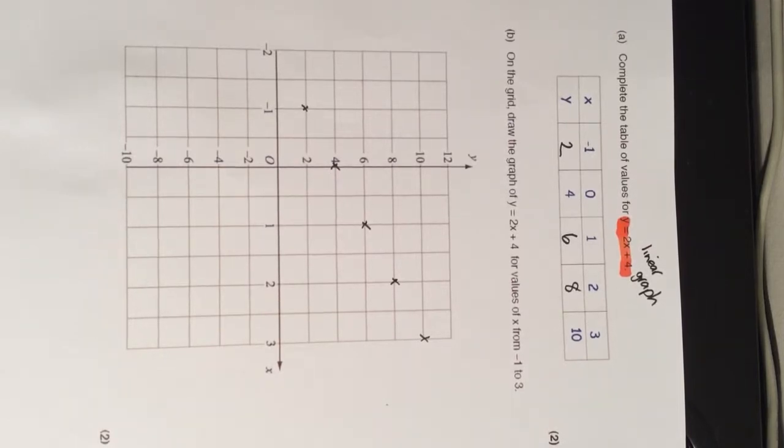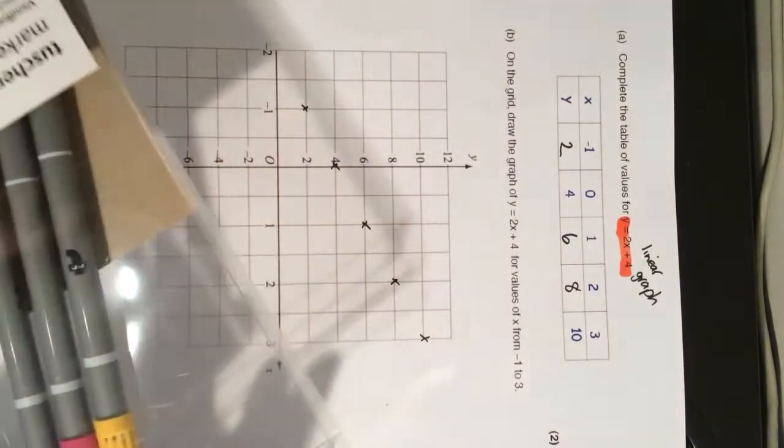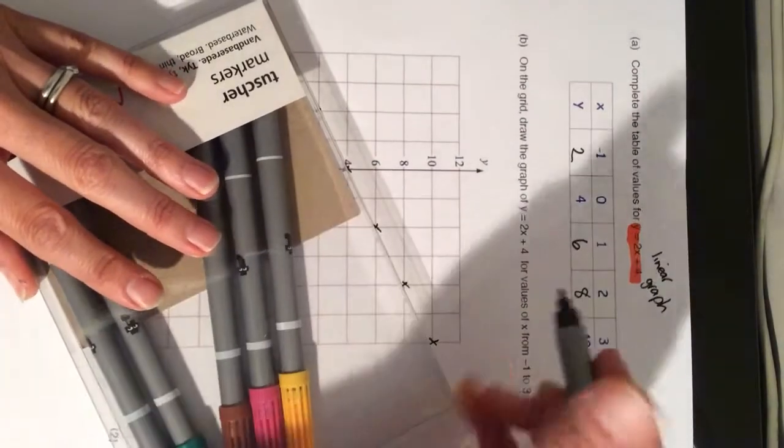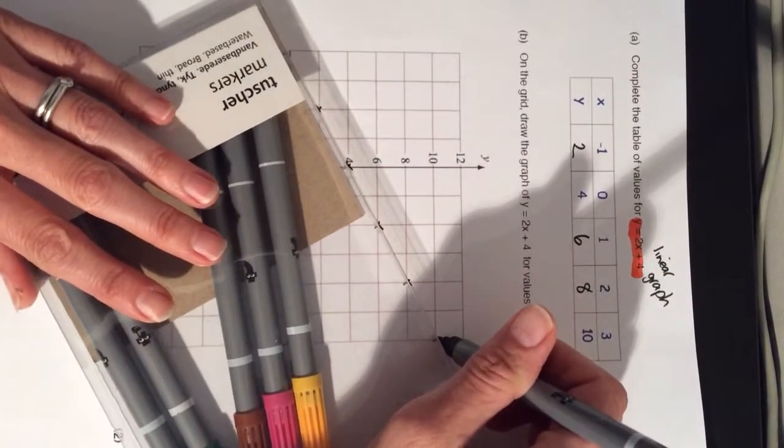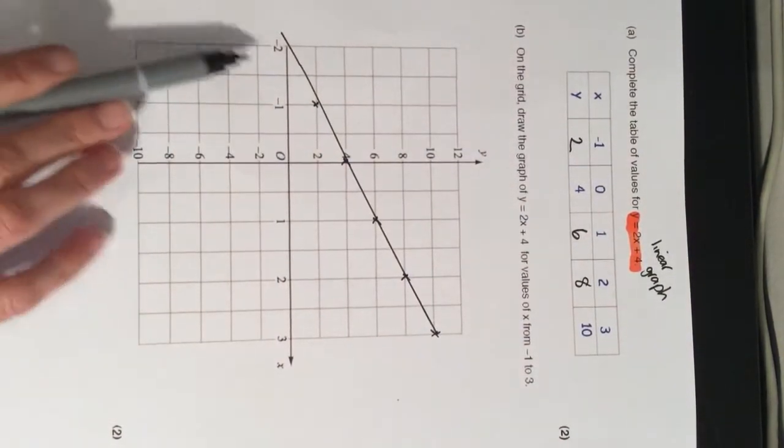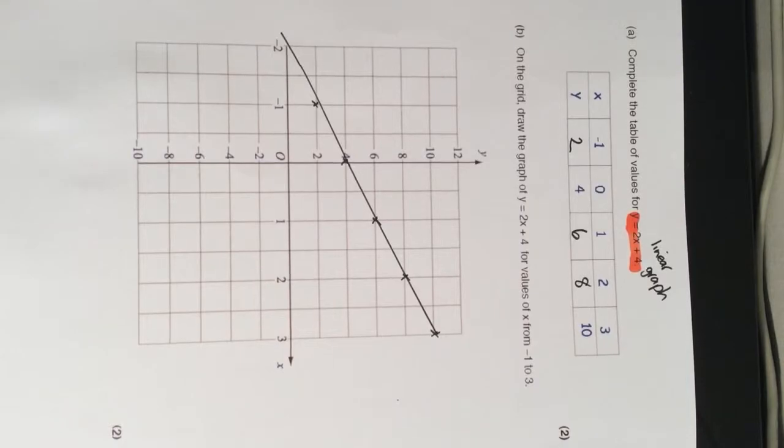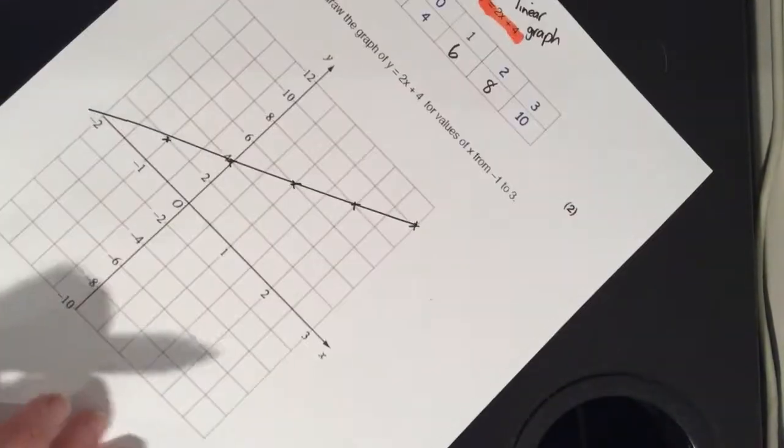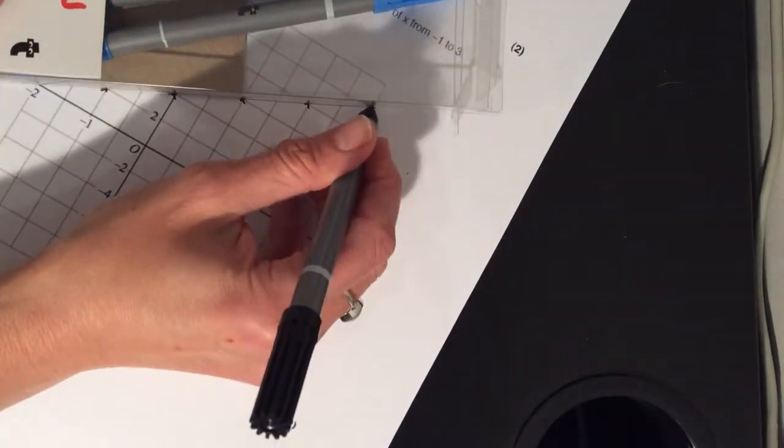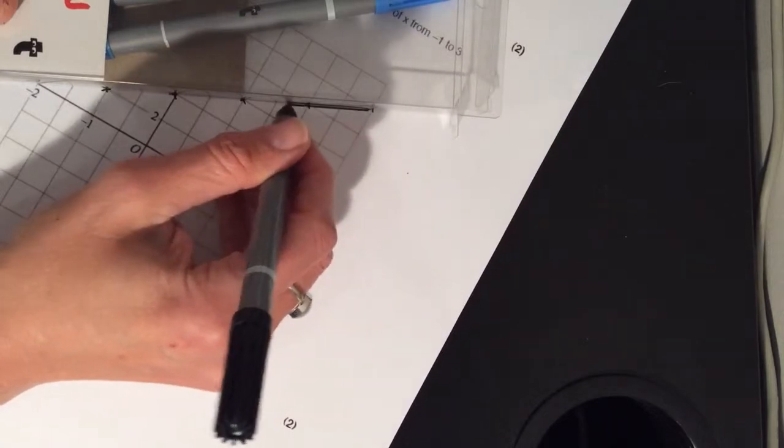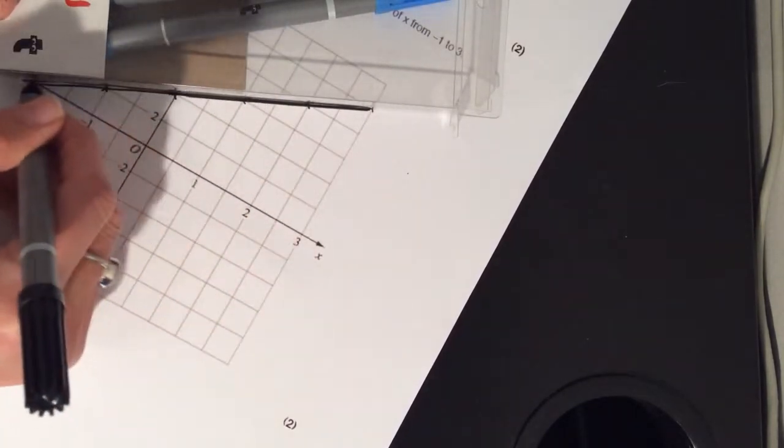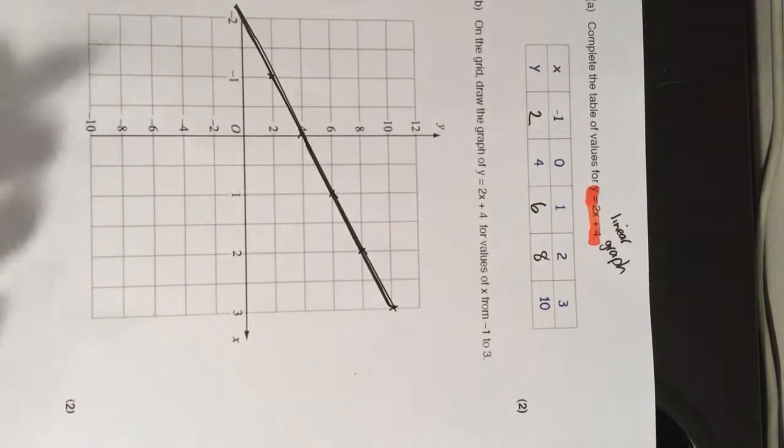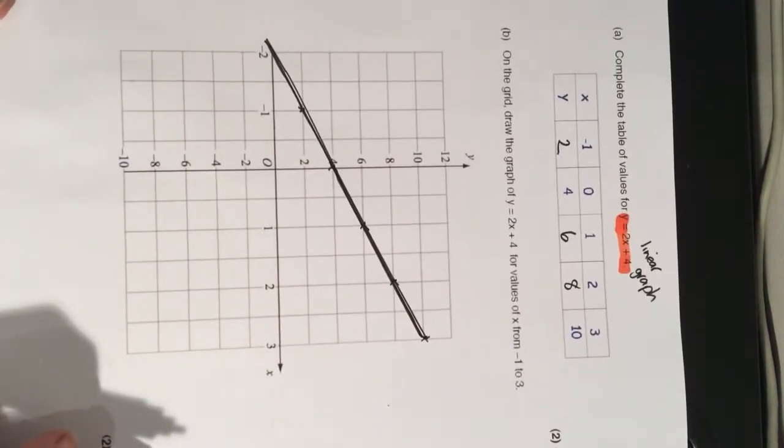Then the only last thing that you need to do is you need to draw a straight line between those points. And your question will be complete. Now, if you don't draw a straight line between your points, or you do something silly like I've just done there, make sure that you go ahead and you make it as neat as possible using, hopefully, a ruler. Not like me, who's not prepared. Using a ruler.